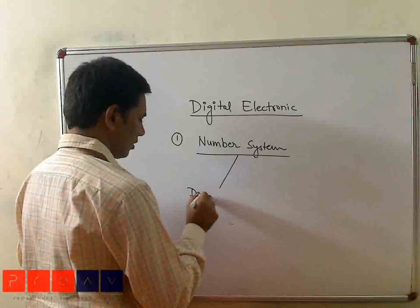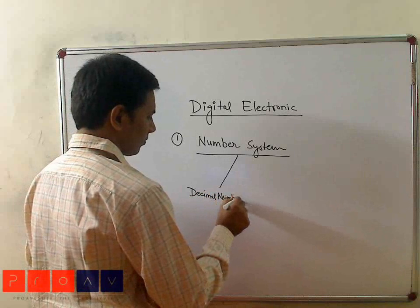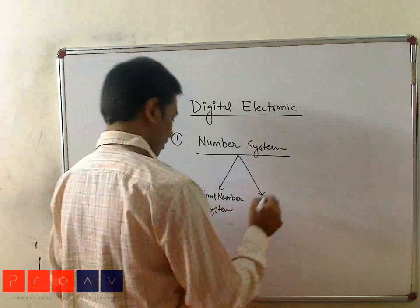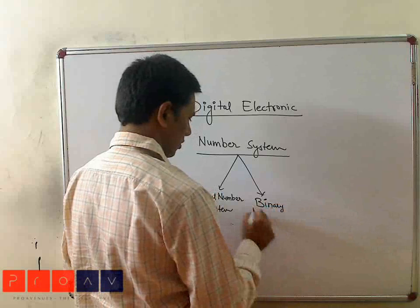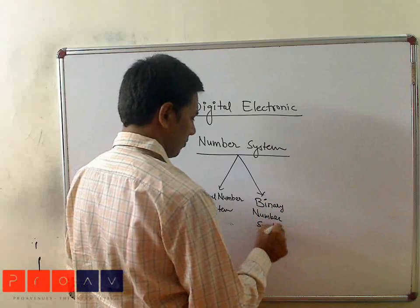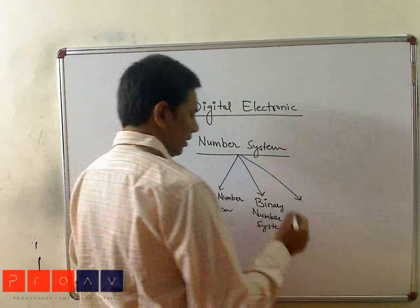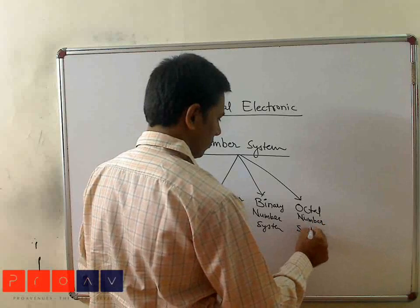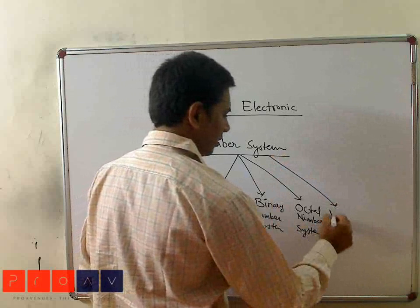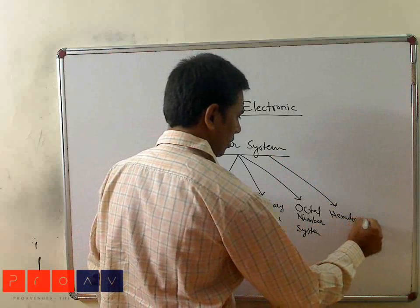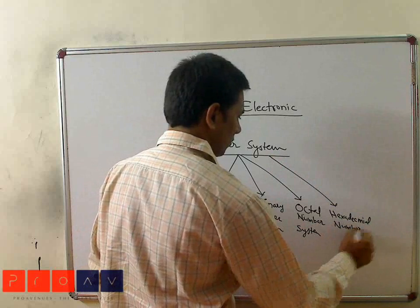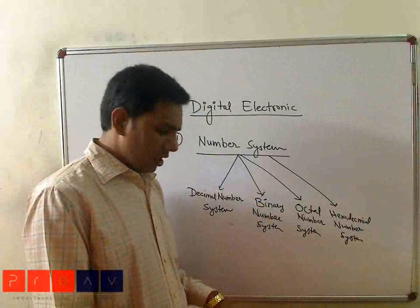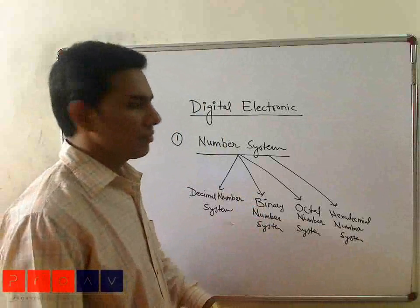First is the decimal number system, which is generally used in your life. Second is the binary number system. There are four kinds of number system which can be used in digital electronics, but generally number systems are of many types.